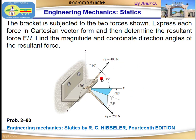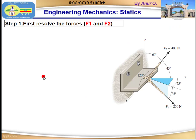F2 is expressed in coordinate direction angles alpha, beta, and gamma: alpha is 120 degrees, beta is 45 degrees, gamma is 60 degrees. Now let's go to the solution. The first step is to resolve each force into x, y, z components. Let us start with F1.